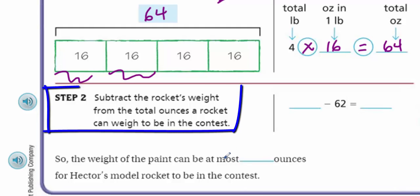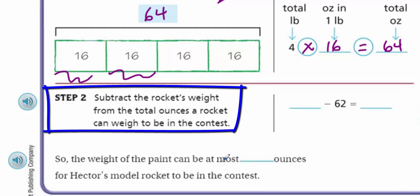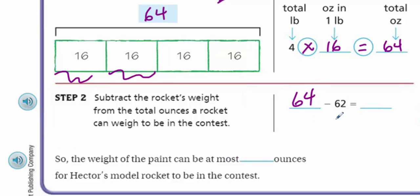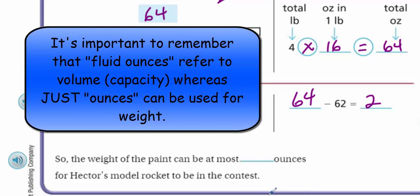Step two: subtract the rocket's weight from the total ounces a rocket can weigh to be in the contest. That was 64, and we're subtracting the 62, because 62 ounces was what his rocket weighs right now — without any paint, the actual weight was 62. So this leaves us with two ounces. That means he can only use two ounces of paint. The weight of the paint can be, at most, two ounces for Hector's model rocket to be in the contest.